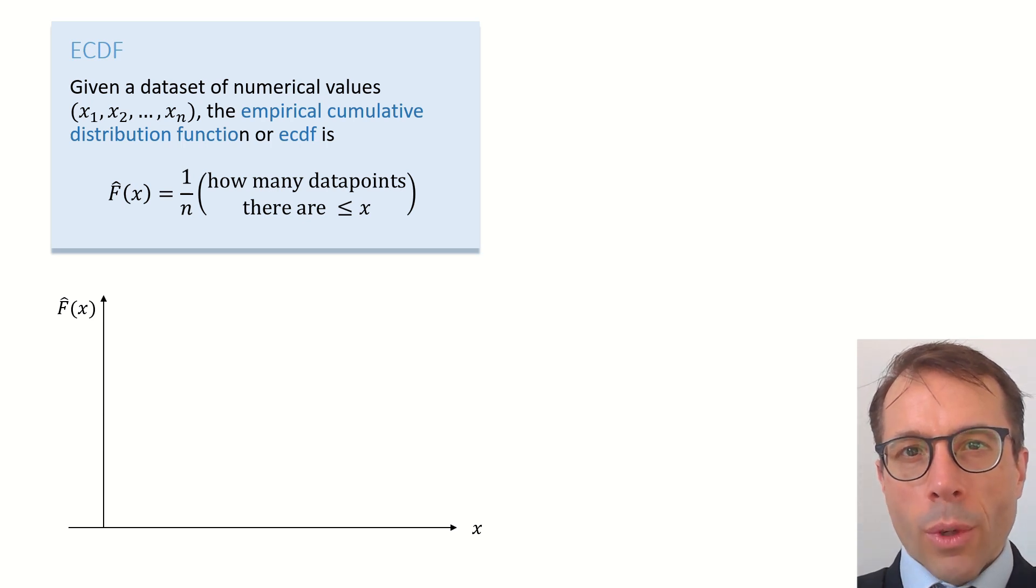Let's think through how we'd plot it. Here are axes, x on the horizontal axis, and I want to plot f-hat of x on the vertical axis. Here's a point to start with. At x equal to the minimum value in the dataset, what is f-hat of x?